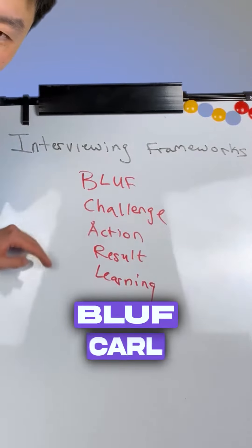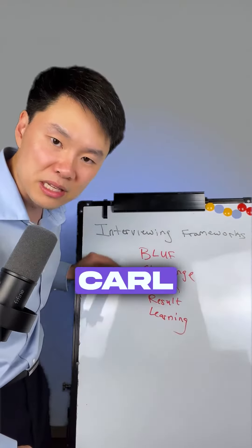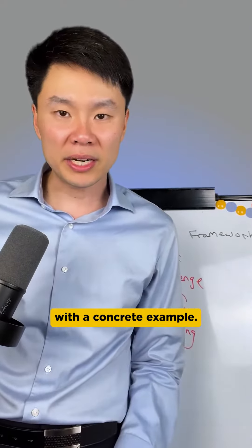That framework is BLUFF plus CARL. BLUFF stands for bottom line up front and CARL stands for challenge, action, result, learning. Let me walk you through this framework with a concrete example.